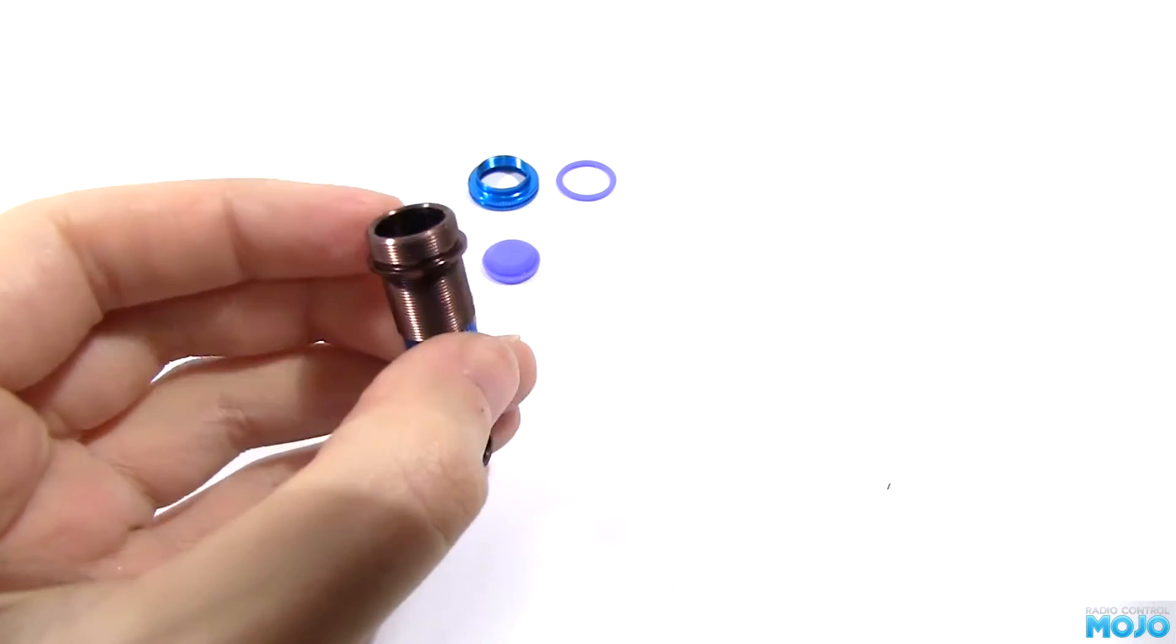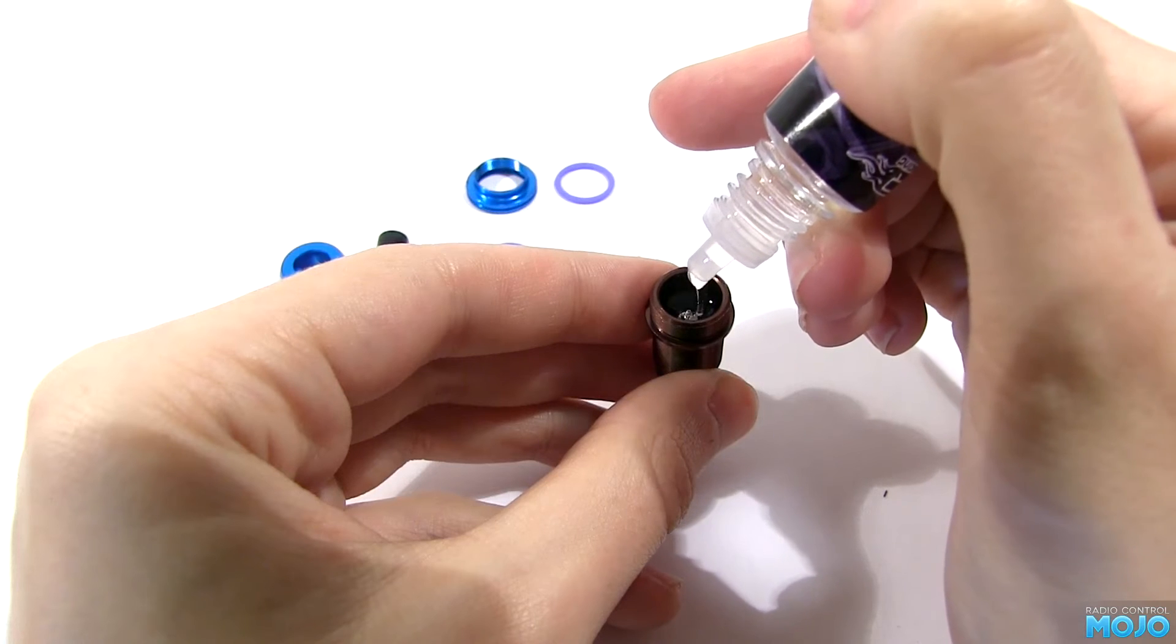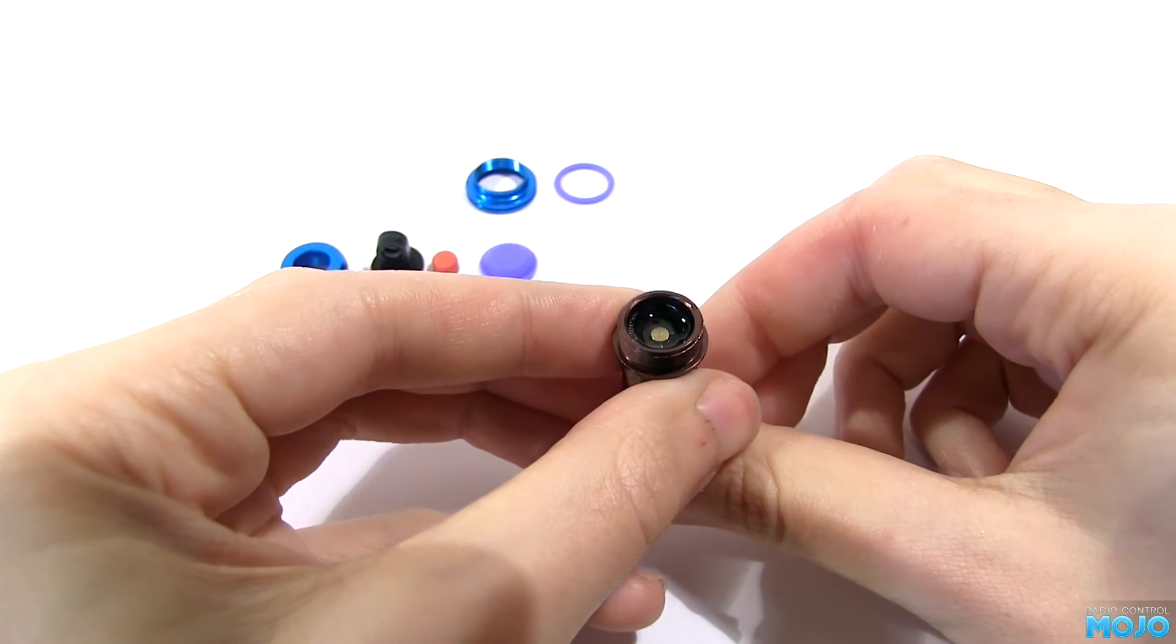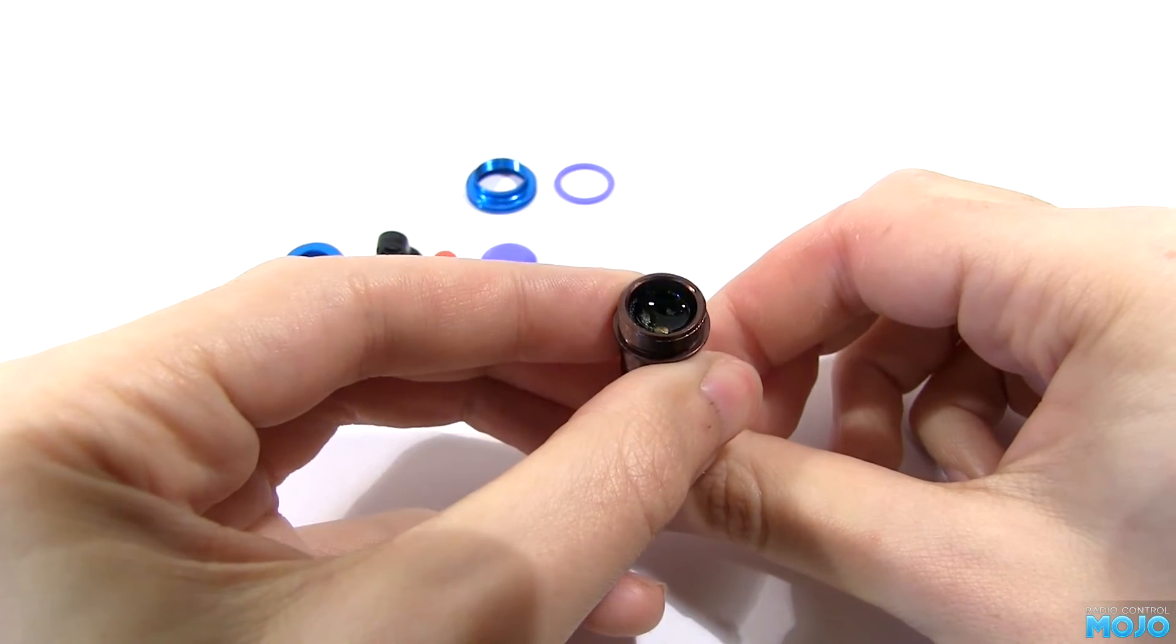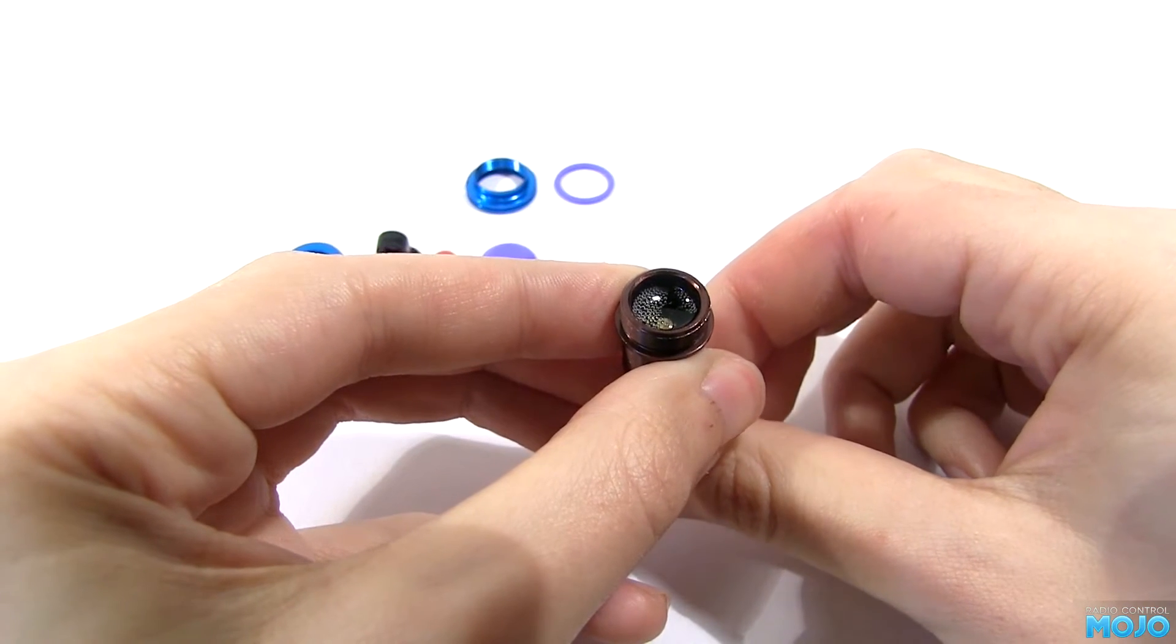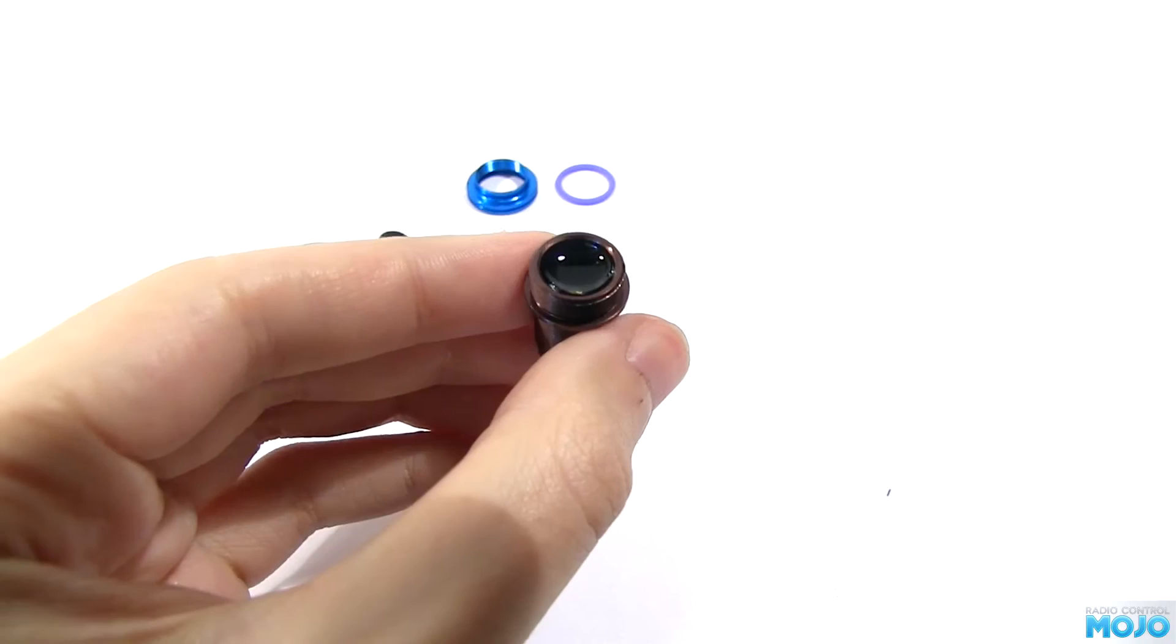With the piston at the bottom of the body, fill it to just below the top with the silicone oil. Now slowly move the shaft up and down to get the air that's trapped under the piston. For the best set up, leave it stood up for an hour or so to let the air rise to the top. When the bubbles have gone, top up the oil.